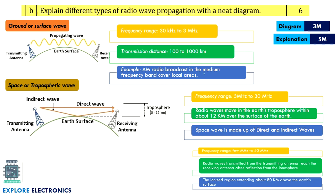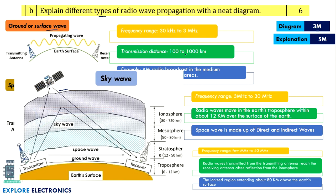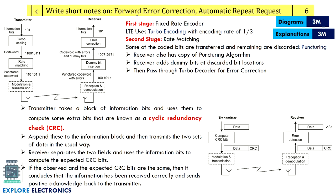Explain different types of radio wave propagation with neat diagrams. The three types are surface wave, tropospheric wave, and sky wave. For each type, provide a diagram and a brief explanation covering the frequency range, distance covered, and applications. The diagrams are essential here — explanation alone will not get full marks.